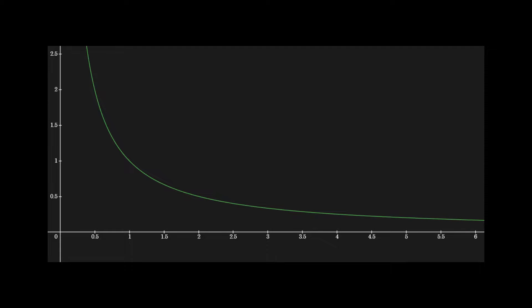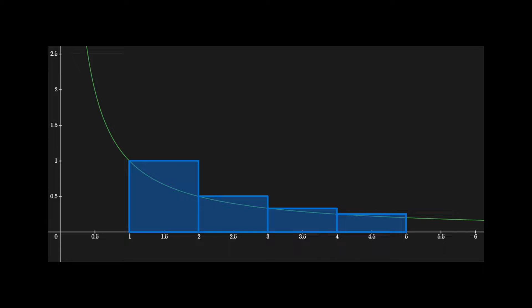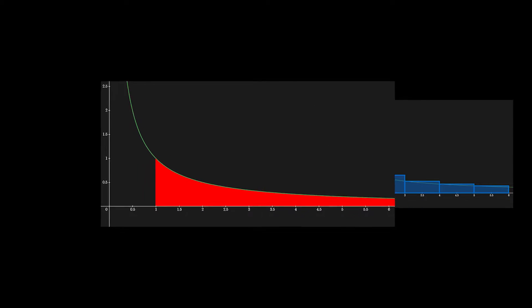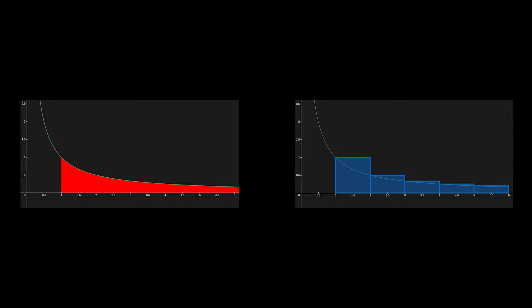Now let's examine the left Riemann sum. All the rectangles have a width of 1, represented in blue. The infinite sum of these blue rectangles is greater than or equal to the red area under the graph.